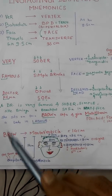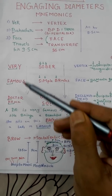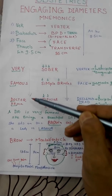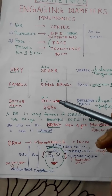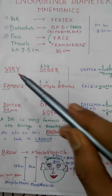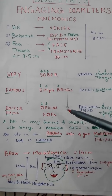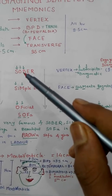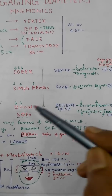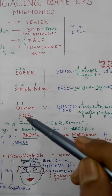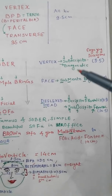Remember in this order, top downward: very famous doctor Hema, sober, simple, brings official sofa. Correlating: very is vertex, famous is face, Dr. Hema is deflexed head, sober is suboccipitobregmatic, simple brings is submentobregmatic, official is occipitofacial, and sofa is suboccipitofrontal.